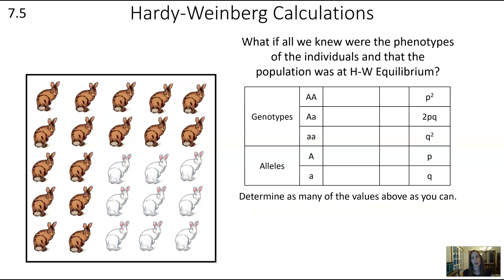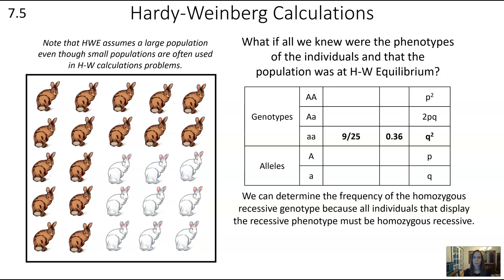Now for more complicated calculations: what if all we knew were the phenotypes of the individuals and that the population was at Hardy-Weinberg equilibrium? We don't know the genotypes — all we know is that we have some bunnies with brown fur and some bunnies with white fur. We do know that white coat is due to homozygous recessive. We can actually determine all of the values. We can determine the frequency of the homozygous recessive genotype because all individuals displaying the recessive phenotype must be homozygous recessive.